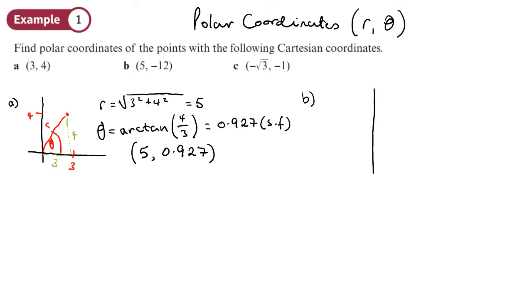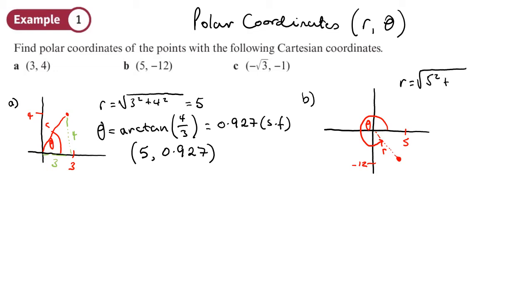So 5 is on the positive x-axis and −12 is down below, giving us this point in the fourth quadrant. r is the distance from the origin, theta is measured from the initial line and goes round anticlockwise to the point. r = √(5² + (−12)²) = 13.